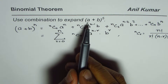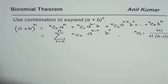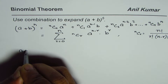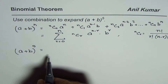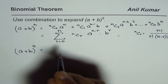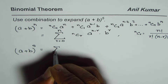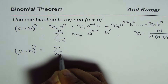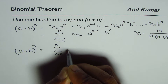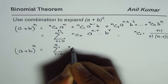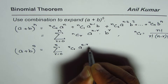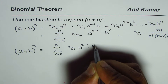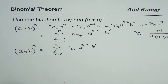So we need to find (a + b) to the power of 5. In sigma notation it can be written as: r from 0 to 5, and 5Cr times a to the power of 5 minus r times b to the power of r. That is the sigma notation — replace n with 5.